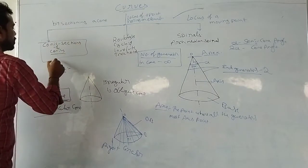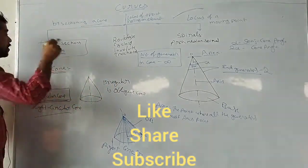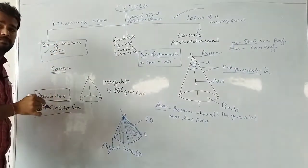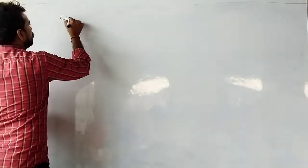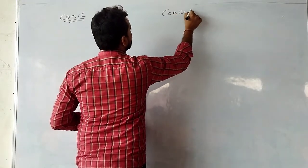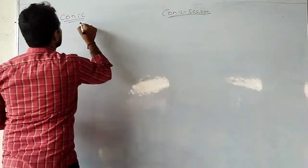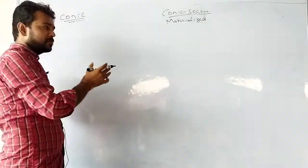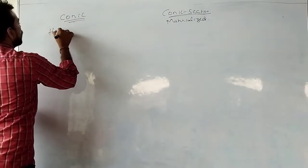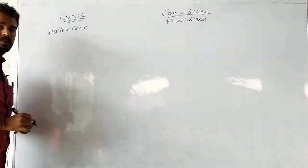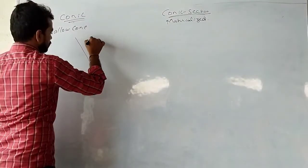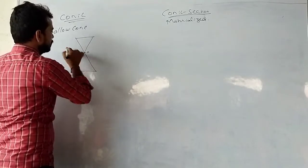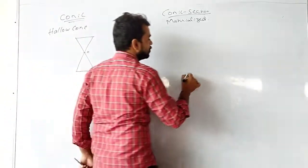Conic sections are formed by sectioning a cone. Now you know about the cone. A conic section is a materialized one — meaning it is like a solid. A conic is a halo cone. For a conic section, one cone is enough.